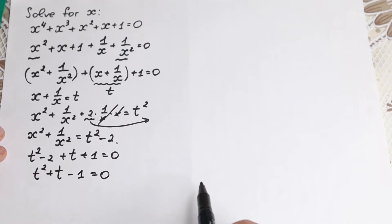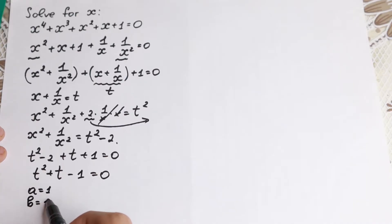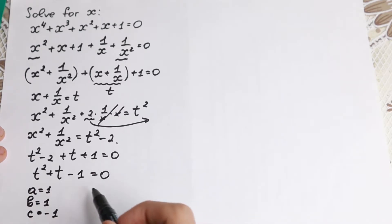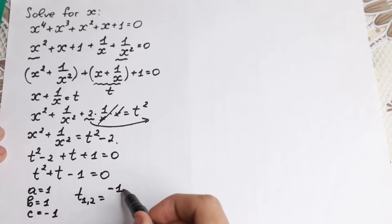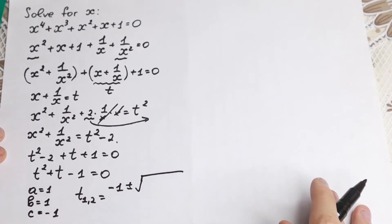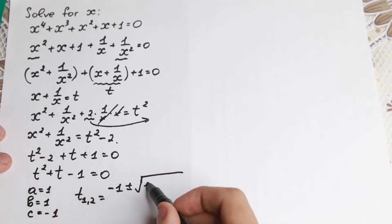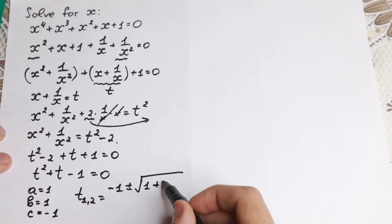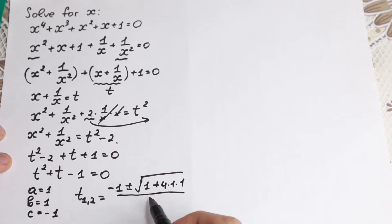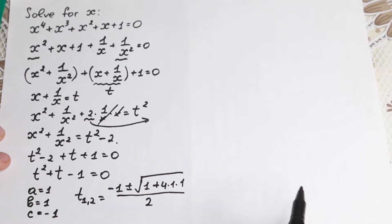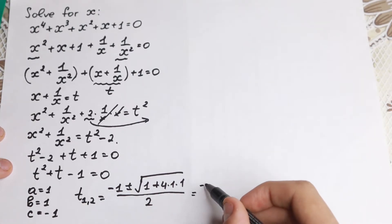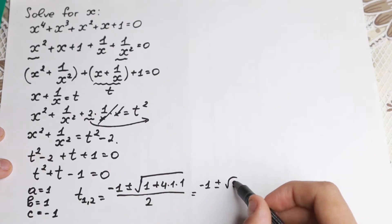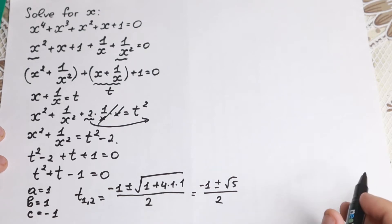This is a classic quadratic equation with a = 1, b = 1, and c = −1. Using the quadratic formula, t₁,₂ = (−b ± √(b² − 4ac)) / 2a = (−1 ± √(1 + 4)) / 2, which simplifies to t = (−1 ± √5) / 2.